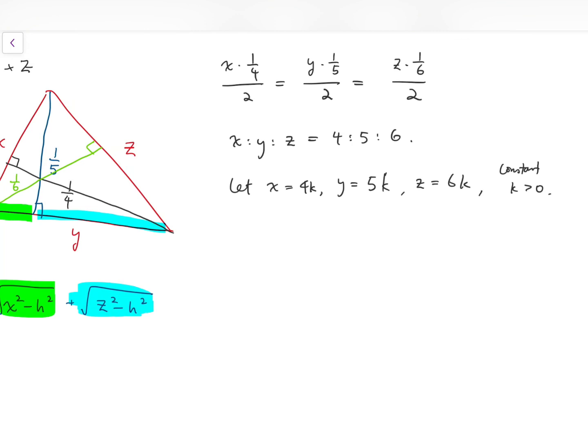And I'm going to consider the area once again. So because x equals 4k, then the area should be 4k times 1 fourth over 2 is the area. Now we can use Heron's formula. So the semi-perimeter is 4 plus 5 plus 6, all divided by 2, so it's 15 over 2 times k.